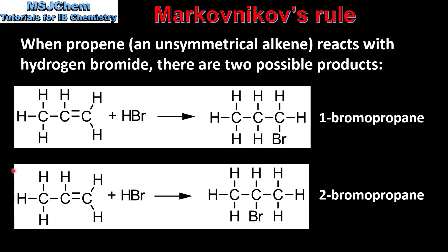In these two reactions we have identical reactants — propene and hydrogen bromide — but in the first reaction the product is 1-bromopropane, and in the second reaction it's 2-bromopropane. Next we'll use Markovnikov's rule to decide which one is the major product.